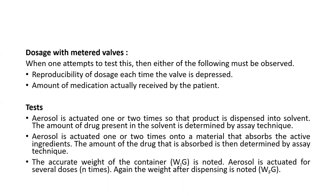The test is: the aerosol is actuated. There are two or three types of tests. The first test is the aerosol is actuated one or two times so that the product comes out and is put into a solvent — it is actuated directly into the solvent. The choice of solvent should be such that the drug is soluble in it. The amount of drug present in the solvent is then determined by the assay technique. The second method: the aerosol is actuated one or two times into a material which absorbs the active ingredients, and the amount of drug absorbed is determined by the assay technique.